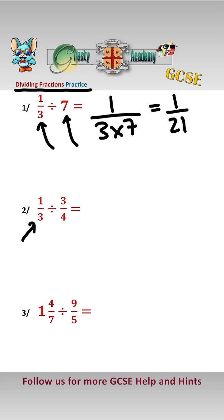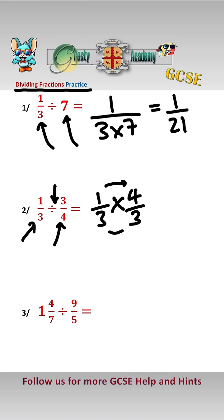Secondly, when we're dividing a fraction by another fraction, what we do is flip the divide to multiply, and then flip the second fraction upside down, and then we just multiply across. That equals 4 over 9.